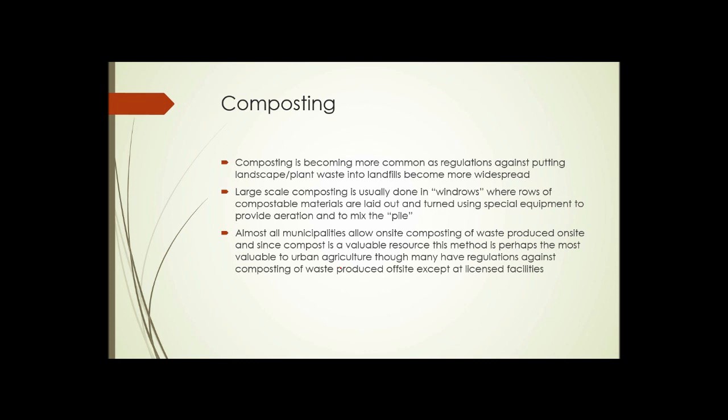Composting is becoming more and more common as regulations against putting landscape and plant waste into landfills become more widespread. When people bag their grass clippings and dispose of them with household trash each week, grass clippings could account for as much as 50 percent of the volume — on average substantially less, but still 20 to 30 percent. When you take into account pruning of trees and shrubs, that's a lot of material going into a landfill that could be more effectively and efficiently disposed of by composting.